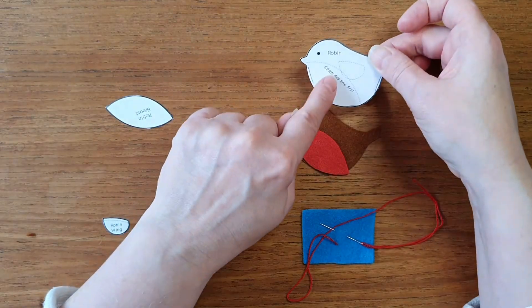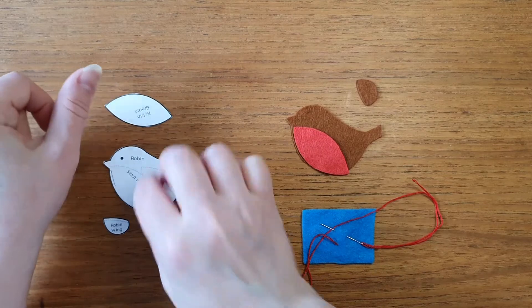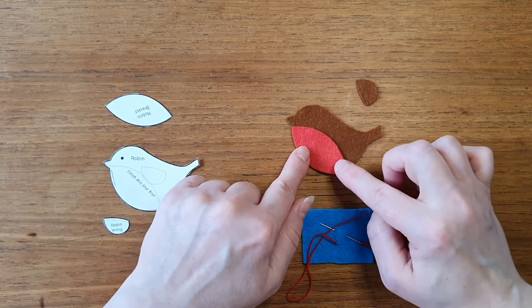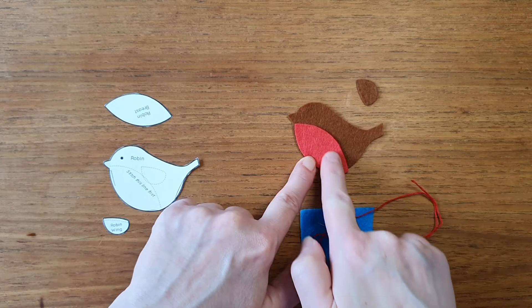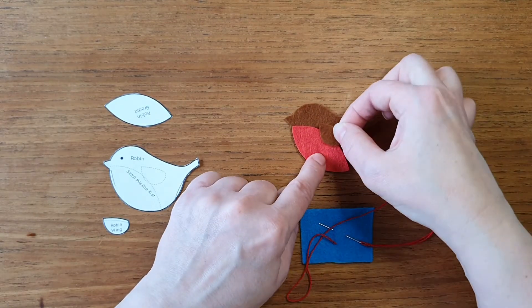Your robin template has that on it as a little hint, and there are some hints in the instructions that help you with this. So this line here first, and then I'm going to place the wing over the top.